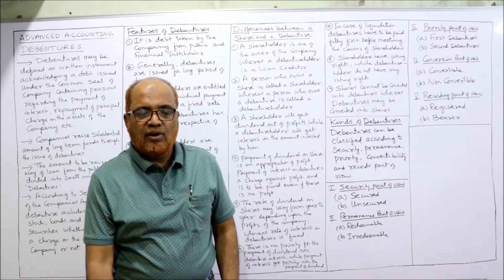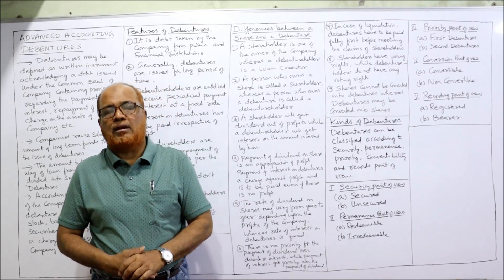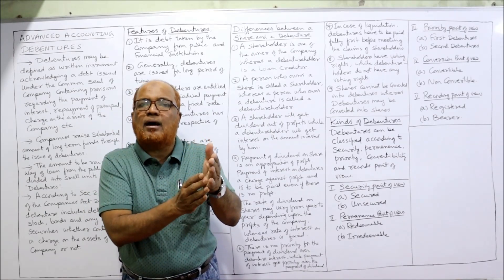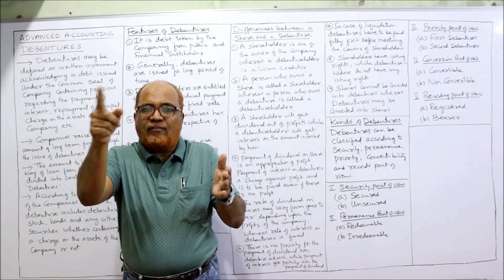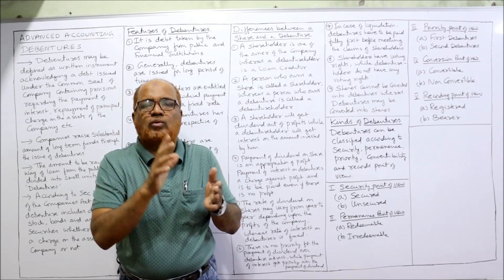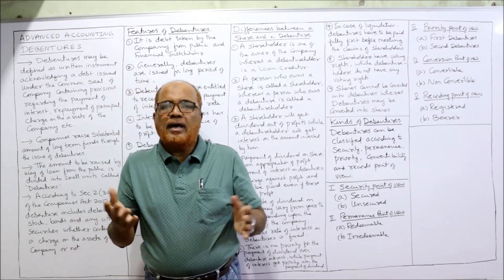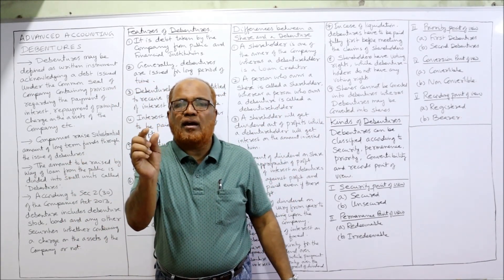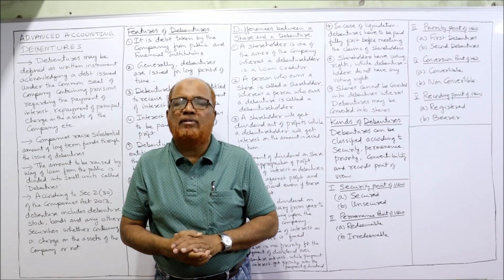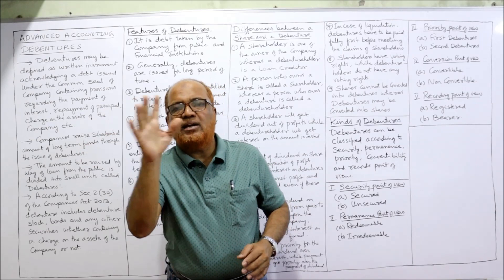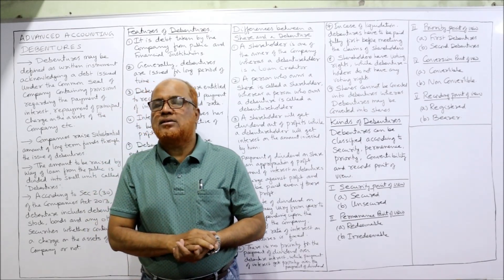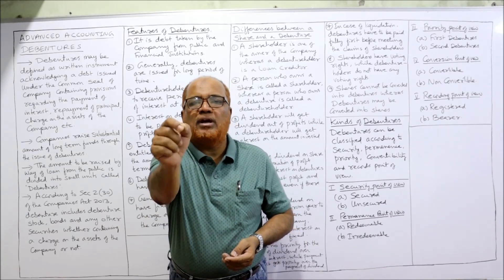From the recording point of view, debentures can be classified as registered and bearer. Registered debentures are those whose holder's name, address, and details are maintained by the company in a register; interest is given according to those records. Bearer debentures are naked debentures — the company does not maintain any record of debenture holders. These are transferable by mere delivery from one person to another without registration. Interest is paid through coupons attached to the debentures; whoever holds the coupons receives the interest.